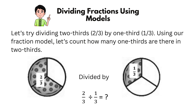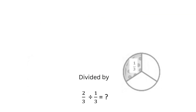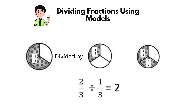Let's try dividing two-thirds by one-third. Using our fraction model, let's count how many one-thirds are there in two-thirds. There are two. So, two-thirds divided by one-third equals two.